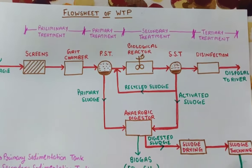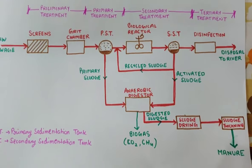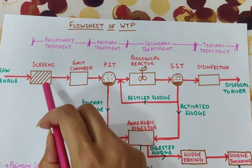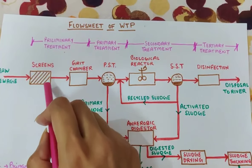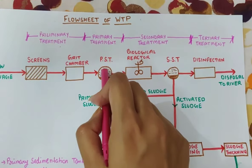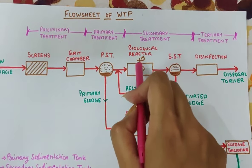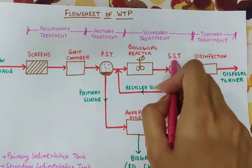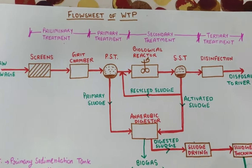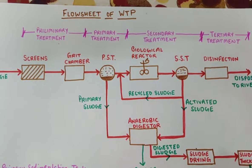I have drawn this flow sheet in detail. If we talk about stages, there are basically 4 types of treatment: Preliminary, Primary, Secondary, and Tertiary. Under preliminary treatment, we have two unit operations: screen and grit chamber. In primary treatment, we have one process which is sedimentation — the unit is called the primary sedimentation tank, or PST. In secondary treatment, the units are the biological reactor and SST, which means secondary sedimentation tank. In tertiary treatment, there is disinfection.